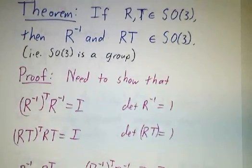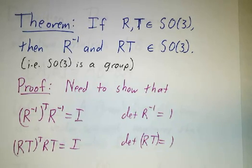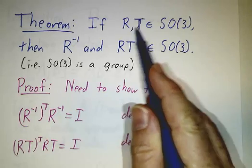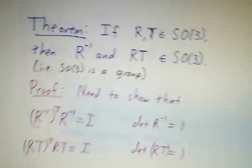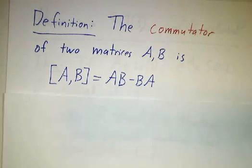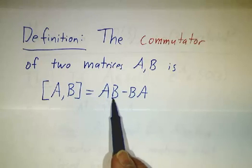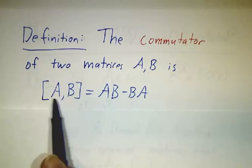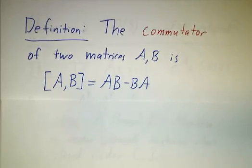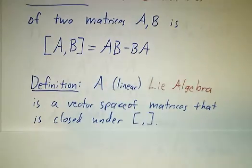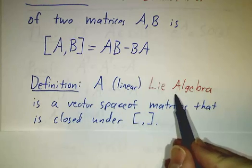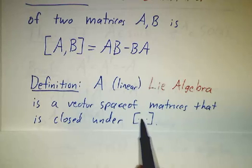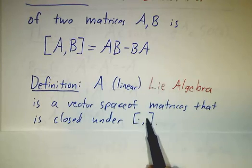So we've shown that SO(3) is indeed a Lie group — 'Lie' meaning it's a continuous group. The product of any two rotation matrices is a rotation matrix, and the inverse of any rotation matrix is a rotation matrix. The commutator of two matrices is defined as AB minus BA, often written in bracket notation [A, B]. A Lie algebra is a set of matrices forming a vector space — closed under addition and scalar multiplication — such that the commutator of any two matrices in the set is also in the set.